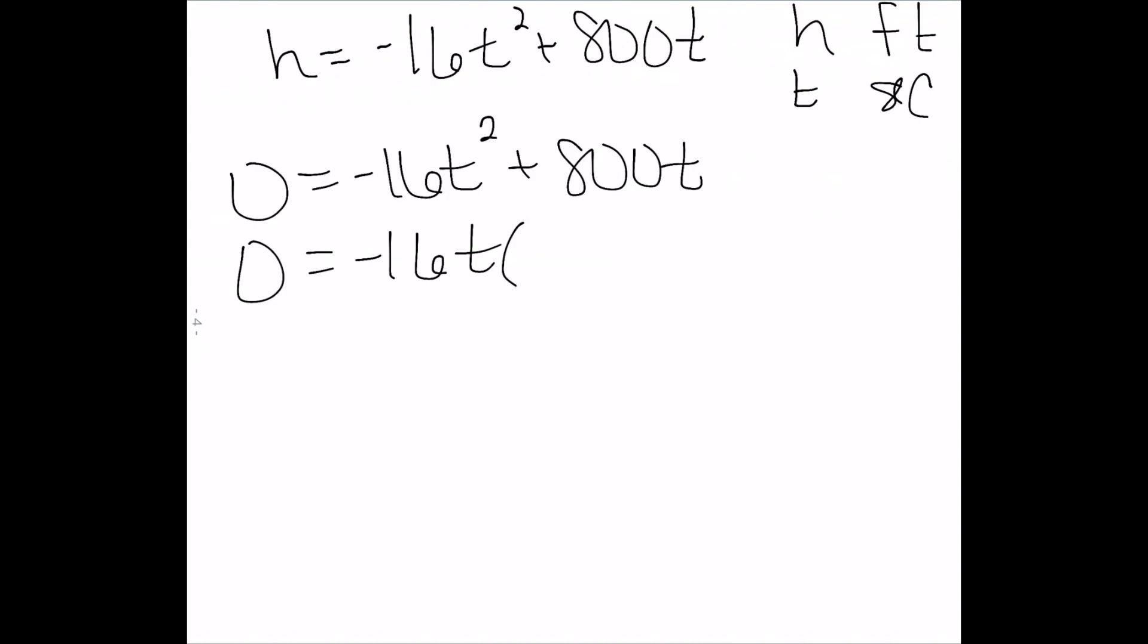So when I do that, I'm left with just a t on the first one. And then when I remove negative 16 from 800, I'm left with negative 50.